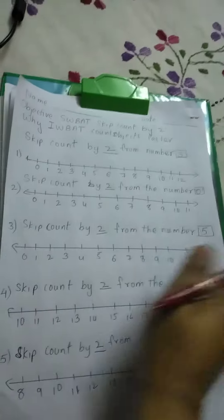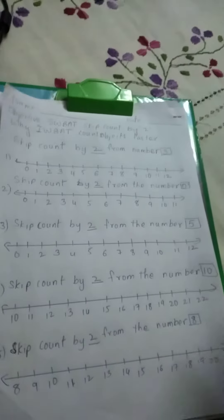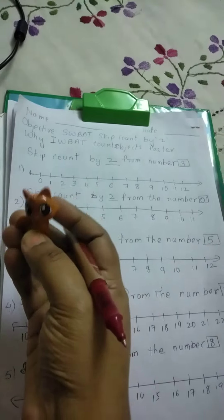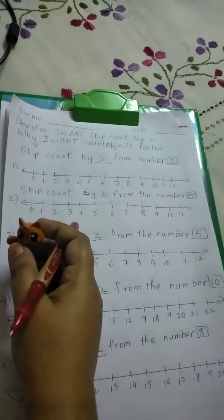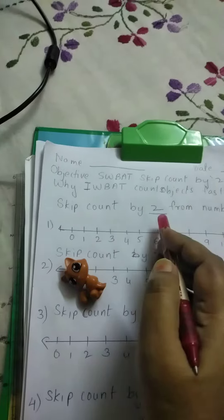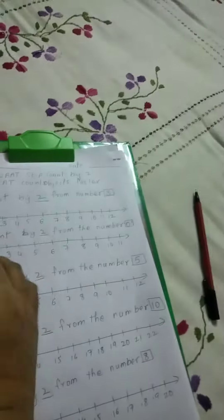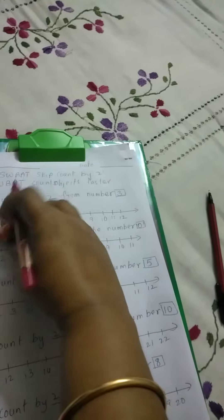Skip counting means we will count faster. This is my kitty. Kitty wants to jump, skip count by 2. Skip count by 2 from the number 3. Kitty is on number 3.